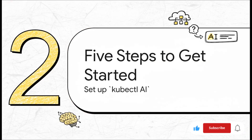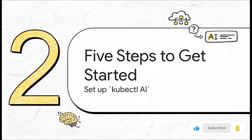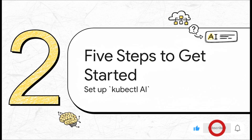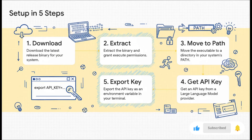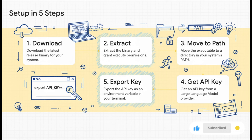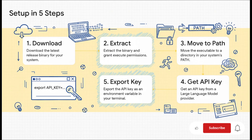So you're probably thinking, how do I get this on my own machine? The best part is it's actually super simple to get started. Let's walk through the five quick steps to get it up and running. First, you grab the binary file for your computer. Then you unzip it and give it permission to run. Third, you pop that file into your system's path — that just means you can run it from any folder.